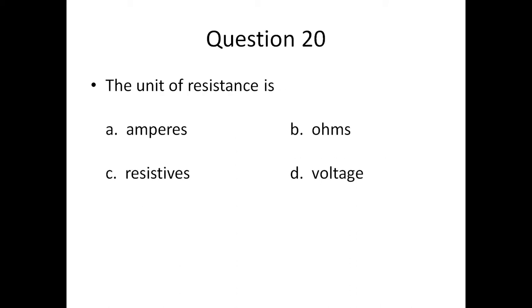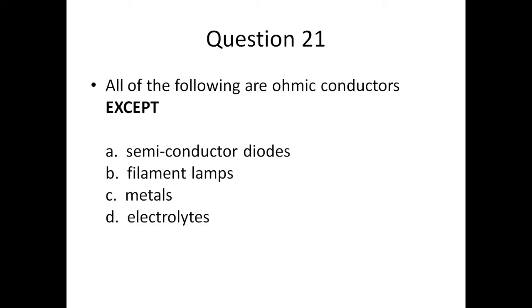Question twenty: the unit of resistance is — A) amperes, B) ohms, C) resistives, or D) voltage.